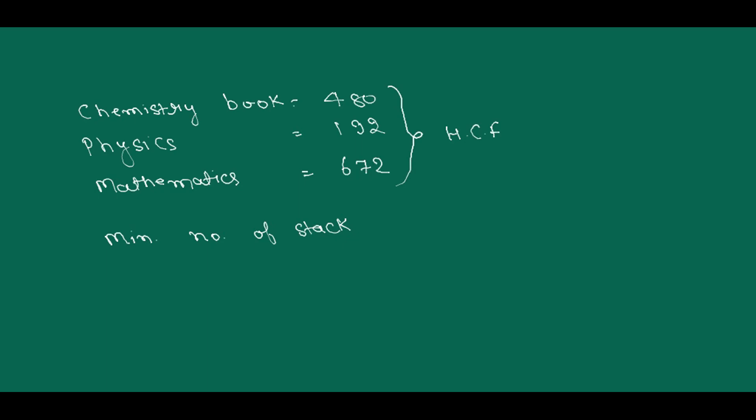But how can you make sure that only one subject on one stack? Because when you find the HCF of all 480, 192 and 672, you got a number which is always divisible by, which always divides 480, 192 and 672. That's why I want to find the minimum number and I want to find the highest common factor.